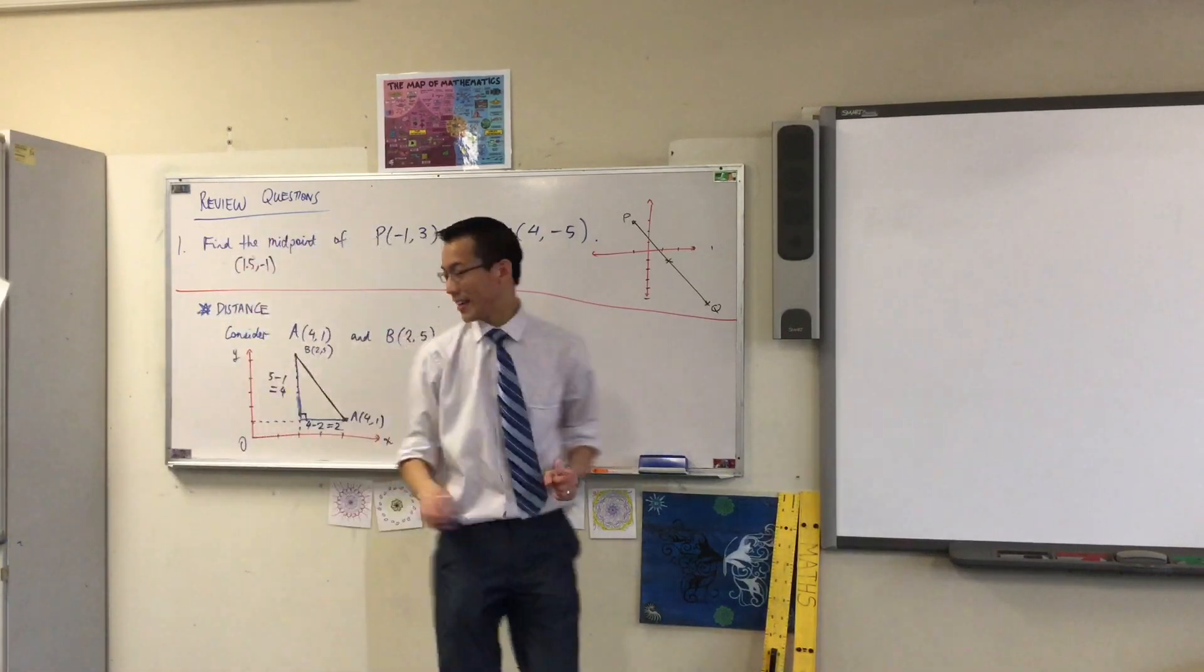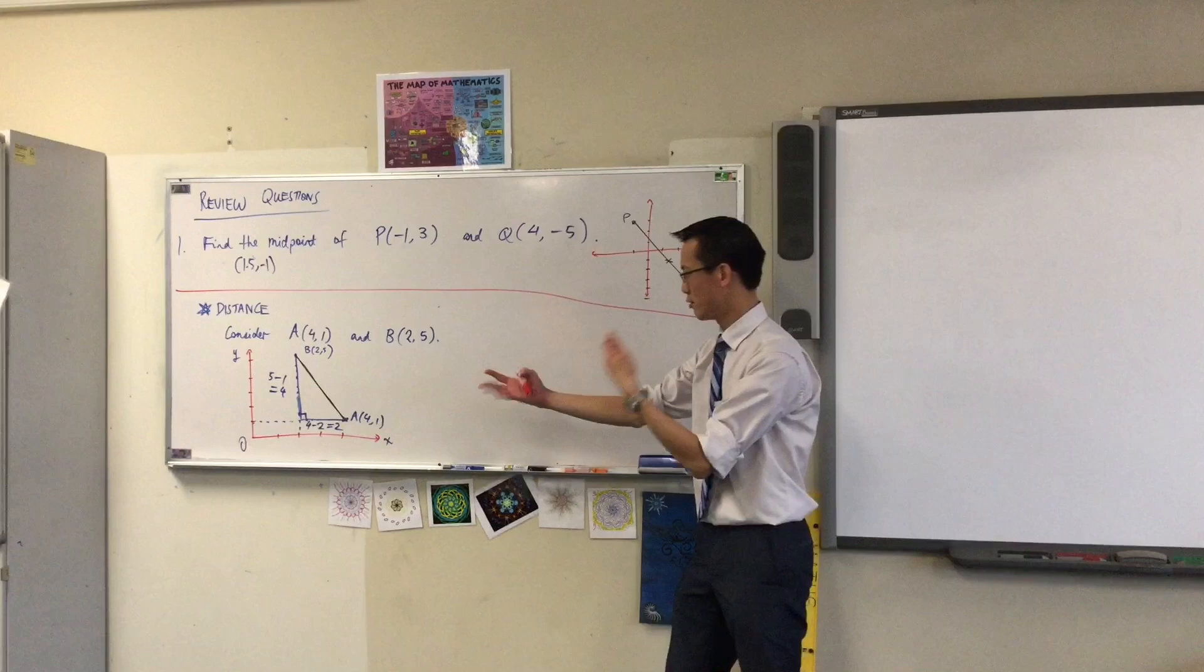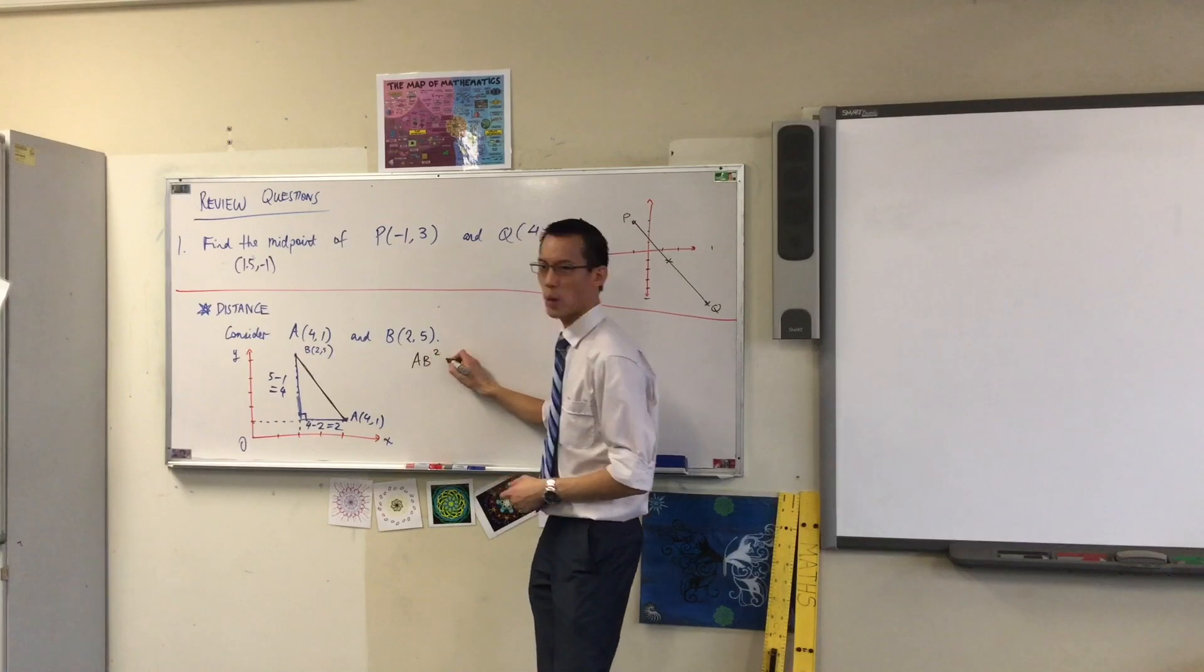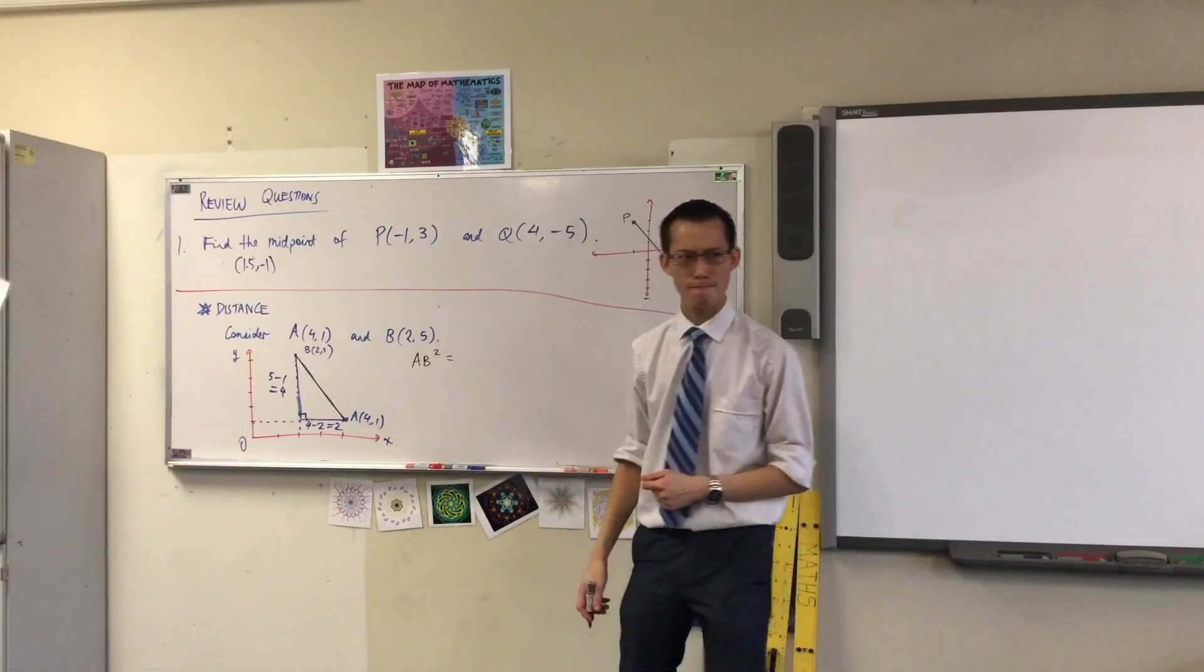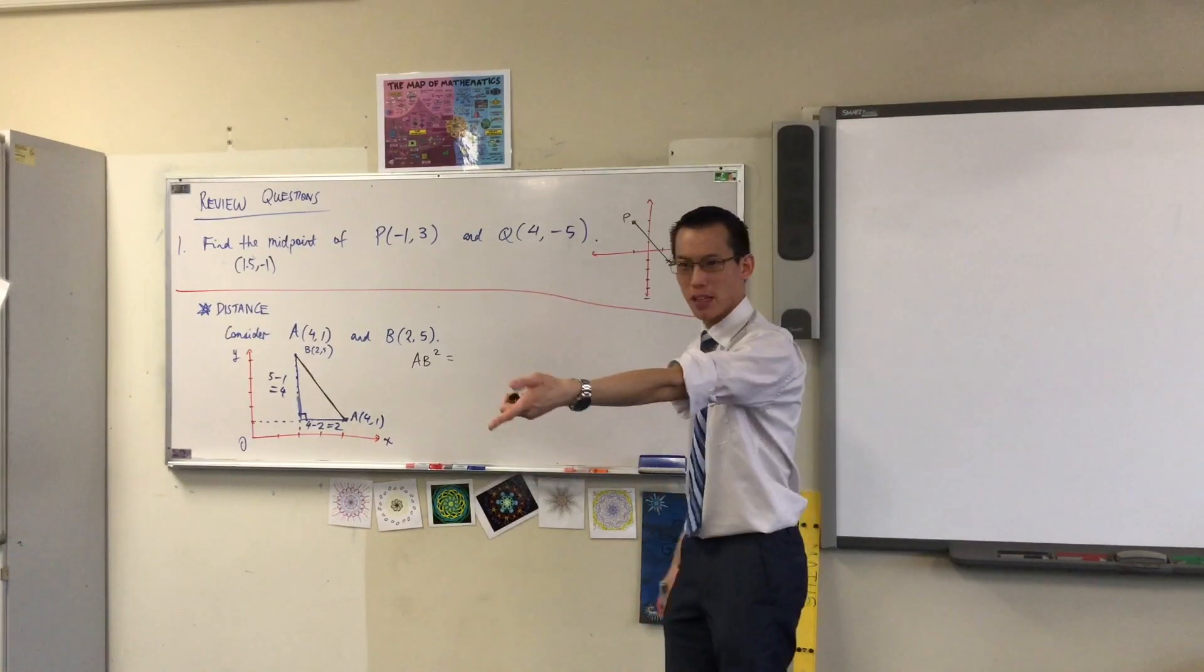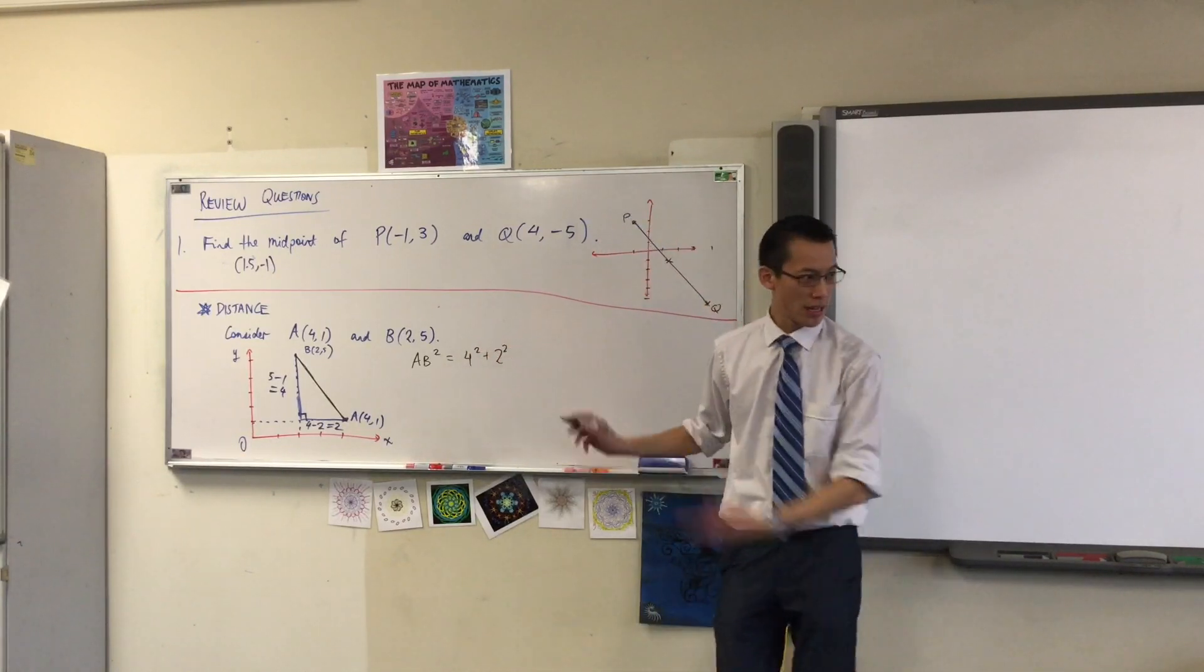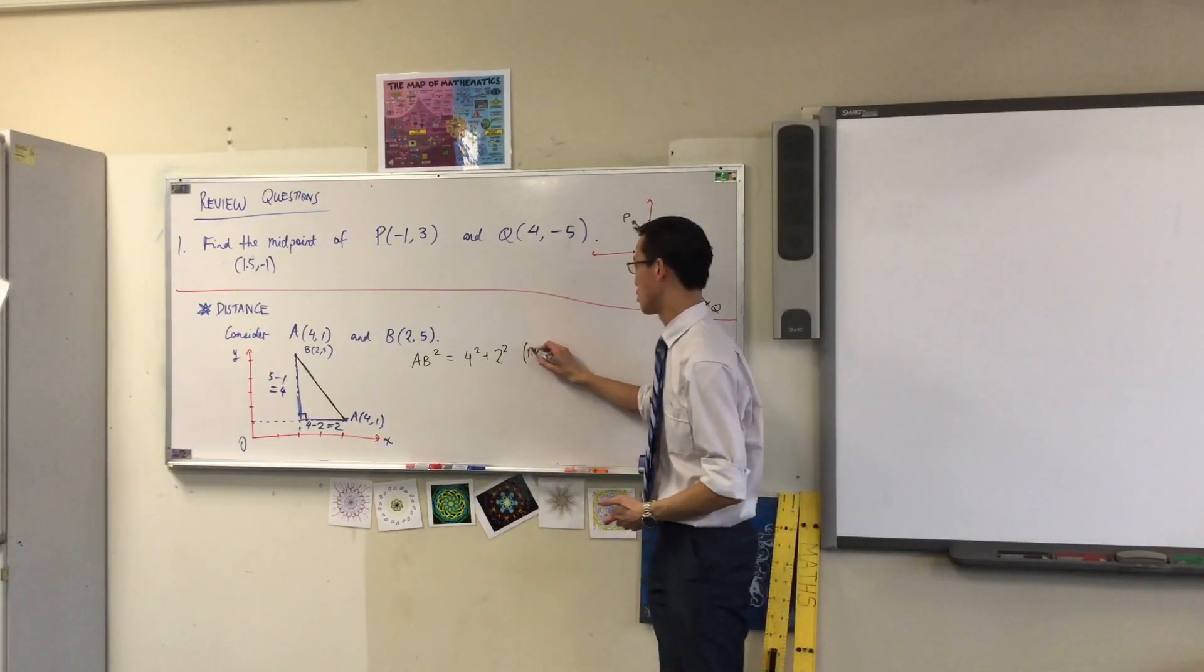Alright, now we're ready. What we can now write is in this triangle, wrong color, I can do Pythagoras' theorem right. So I can say AB squared equals what? What's Pythagoras again? It's A squared plus B squared right. This is the hypotenuse so I'm going to go 4 squared plus 2 squared. Do you agree? That's Pythagoras so therefore since it's Pythagoras I'm going to say Pythagoras' theorem.